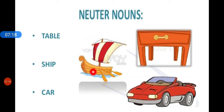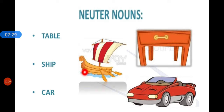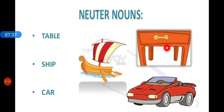The fourth category is neuter gender nouns. Non-living things come under this category. For example, a table, a ship, and a car — they are all neuter gender nouns. Let's move on.